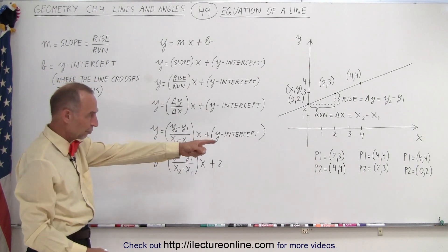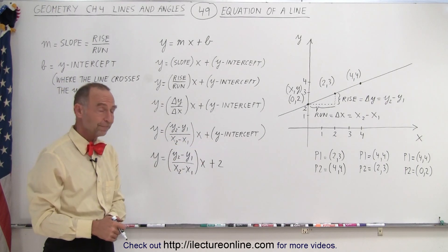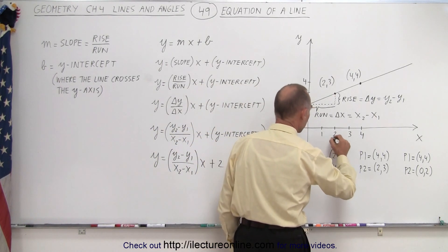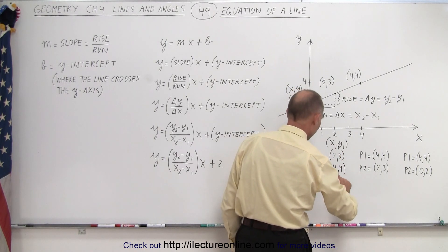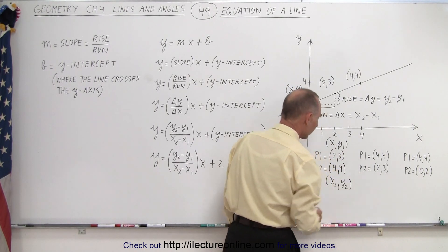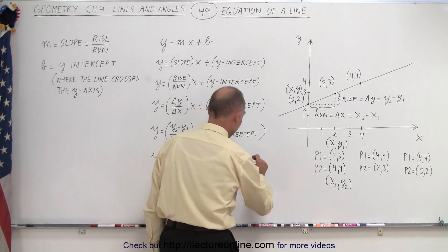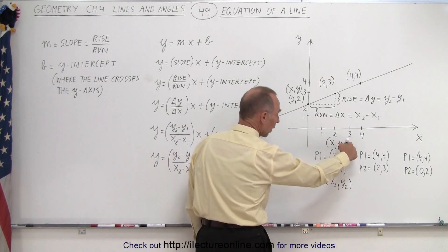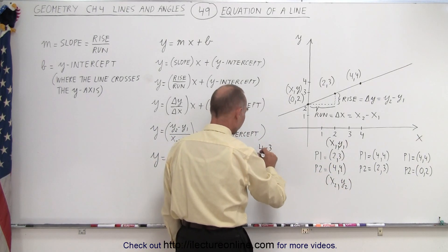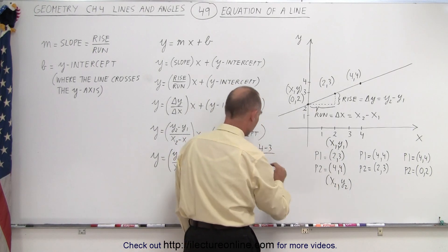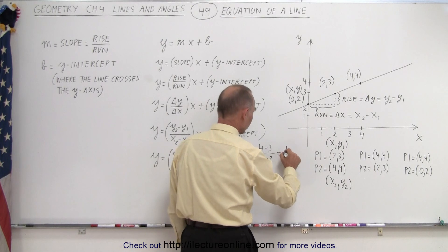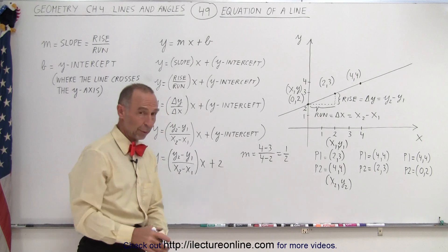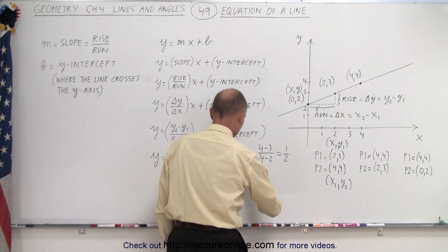Now, how do we find the slope? Well, we have three sets of points. Point 1 has coordinates x1, y1 and point 2 has coordinates x2, y2. So m in the first case will be y2 minus y1, which is 4 minus 3, divided by x2 minus x1, which is 4 minus 2. That equals 1 over 2, or one half. So in that case the slope is one half.